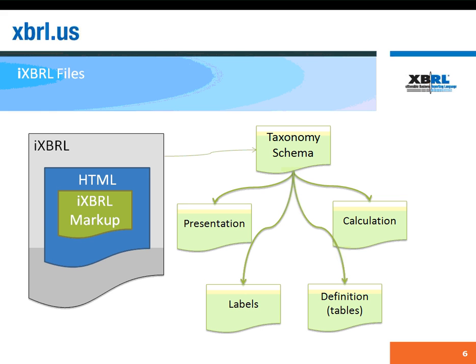In an iXBRL scenario, the HTML document and the XBRL instance document would be combined into a single iXBRL file. It is important to note that there is no change on the taxonomy side — the taxonomy schema and its associated link basis stay the same. So iXBRL is really a different way of presenting the instance data.